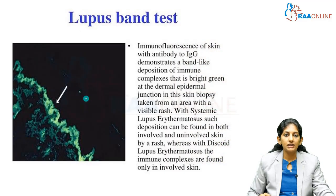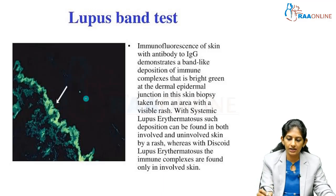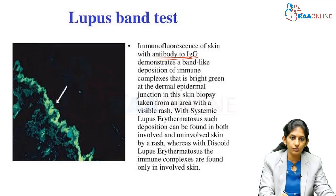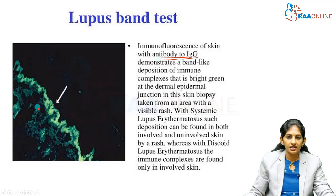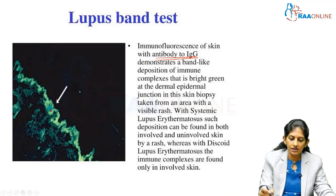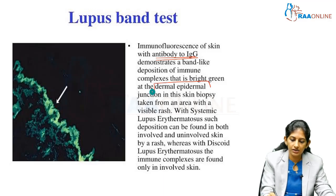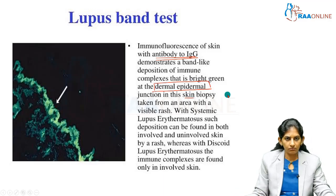When we do an immunofluorescence, we can observe what is called a lupus band. In immunofluorescence, IgG antibodies — shown as bright green — get deposited at the dermal-epidermal junction in the skin. This is called the lupus band test.